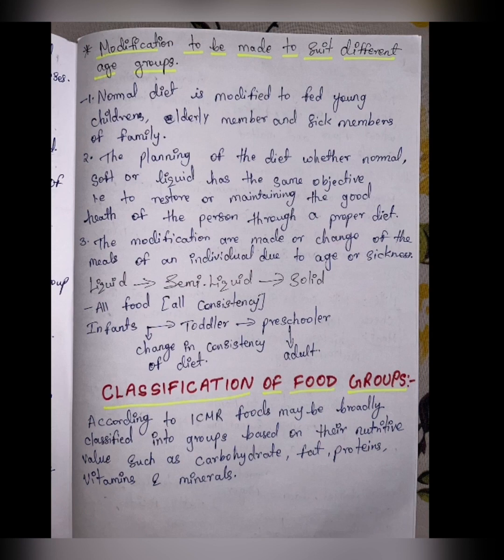Classification of food groups: according to ICMR, foods may be broadly classified into groups based on their nutritive values such as carbohydrates, fat, proteins, vitamins, and minerals.